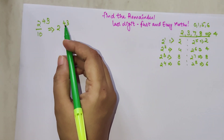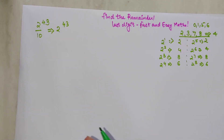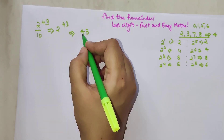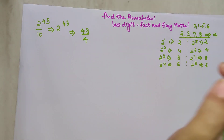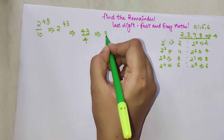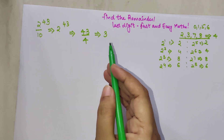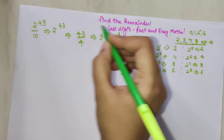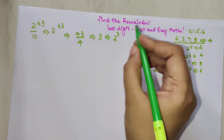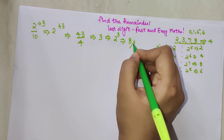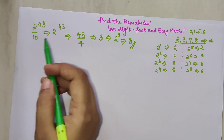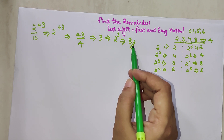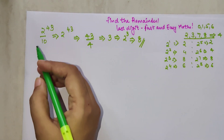If the question is: what is the last digit of 2 raised to 43? You take the index, 43, and divide by the power cycle, which is 4. 43 divided by 4 gives a remainder of 3. That remainder is not your final answer — you then use it as the new index: 2 raised to 3 = 8. So the remainder when 2 raised to 43 is divided by 10, and also the last digit, is 8.